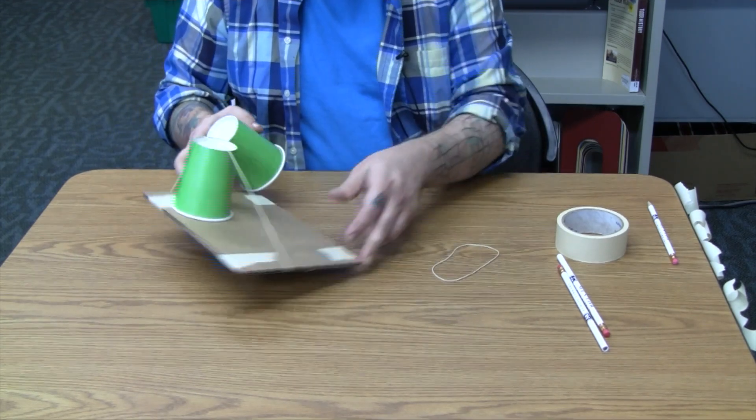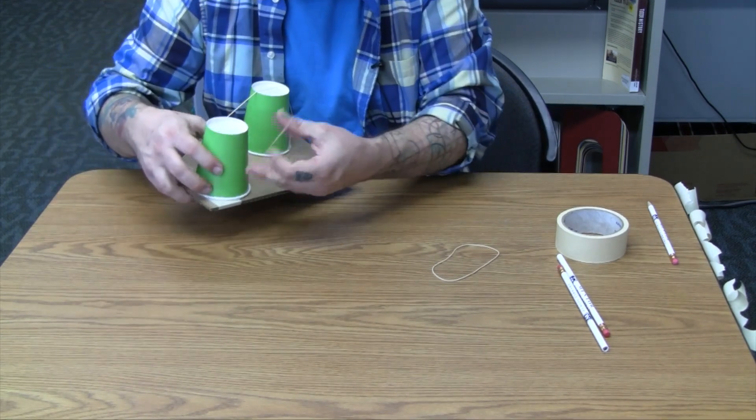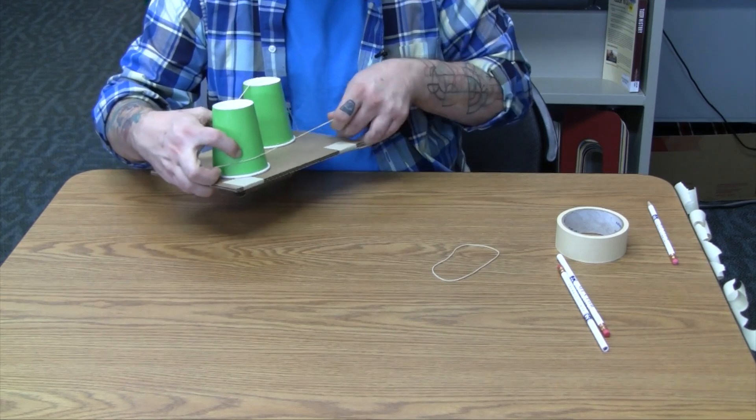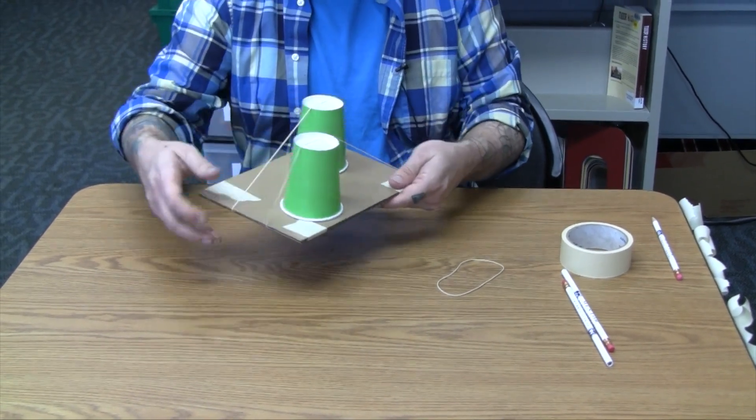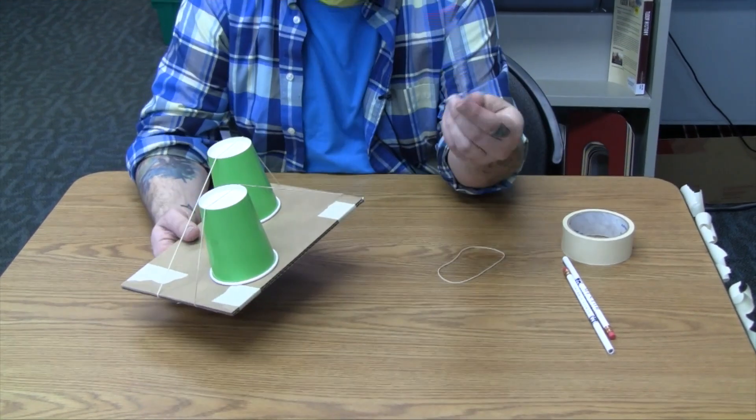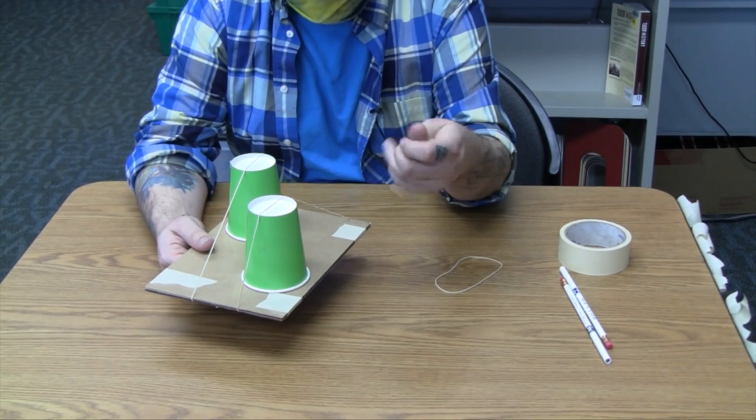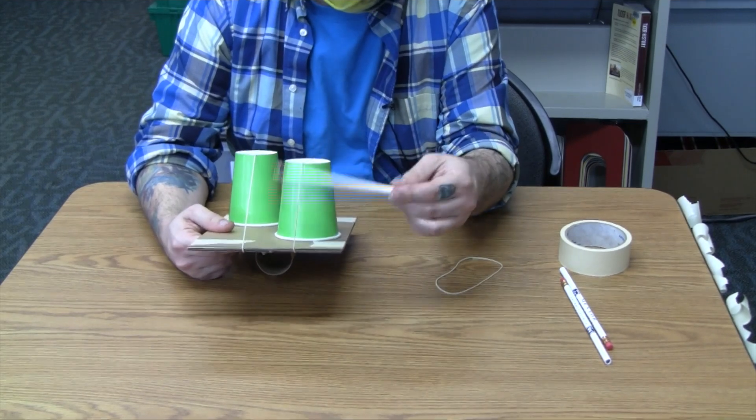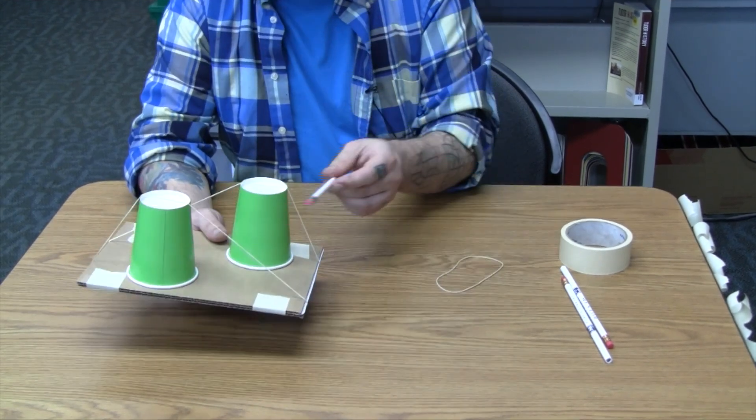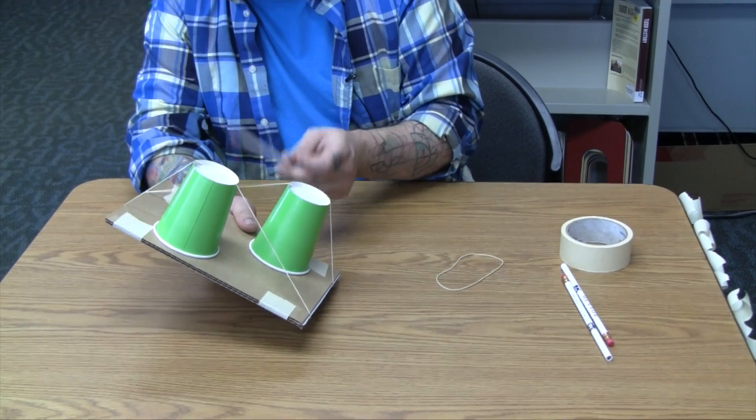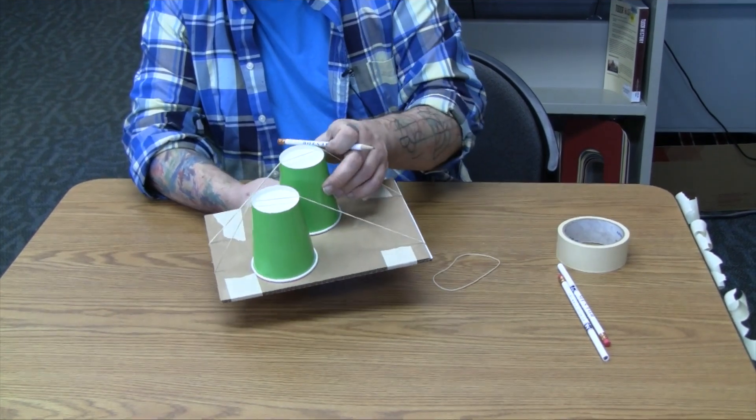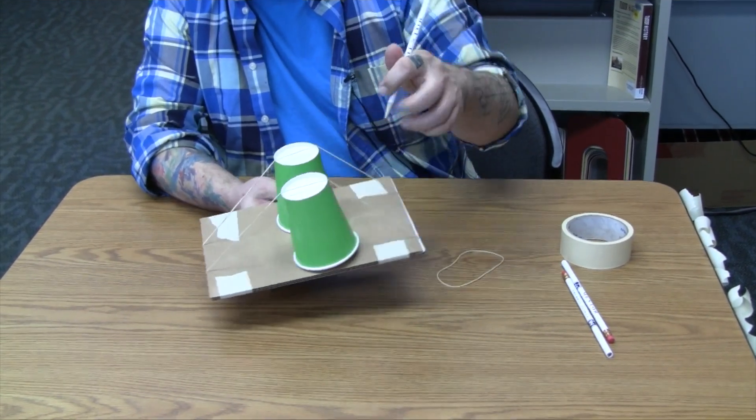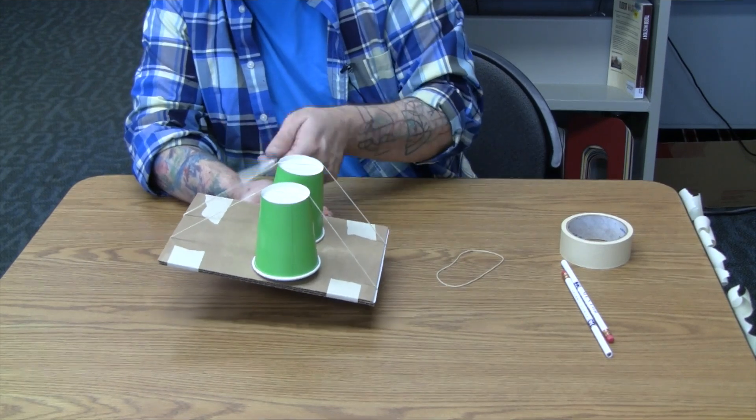And then you put your cup underneath it. Let's do, I'm doing it backwards. Switch that out. Put that up top. And then you can use a pencil or your fingers or whatever. You can pluck at it. You can hear, I don't know how well that picks up, pretty good. But then you can slide the cups around to change how it sounds.